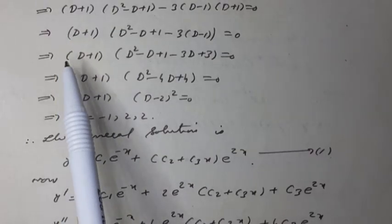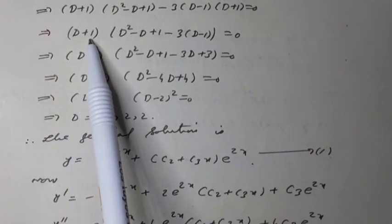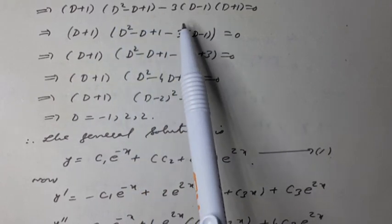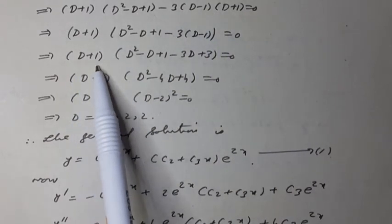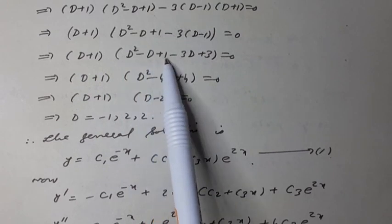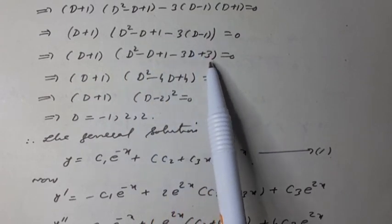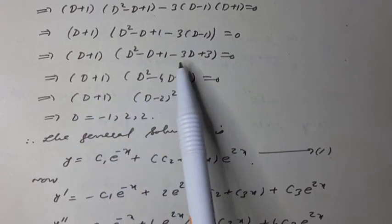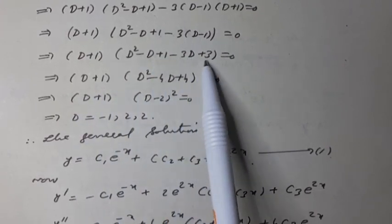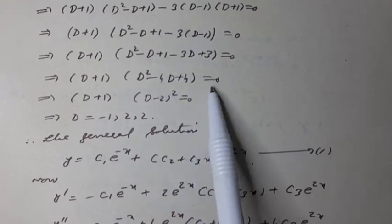Taking (D + 1) common, it can be written as (D + 1)[(D² - D + 1) - 3(D - 1)] = 0, which expands to (D + 1)(D² - D + 1 - 3D + 3) = 0.